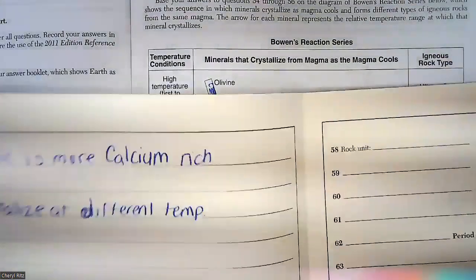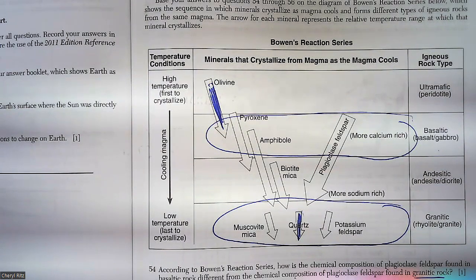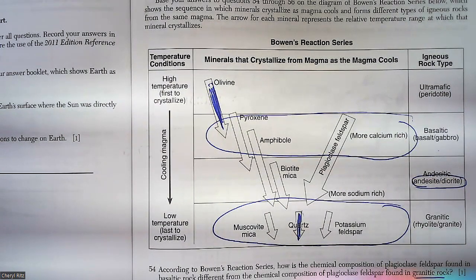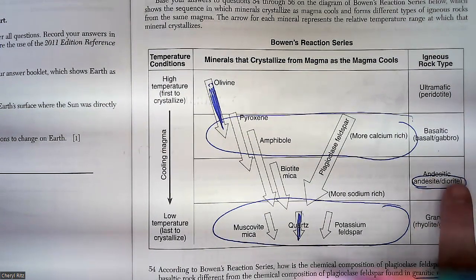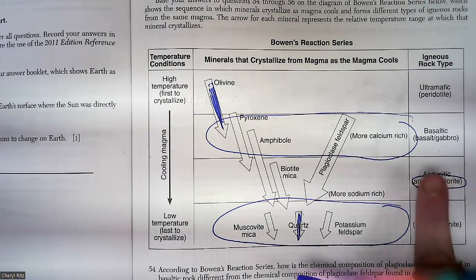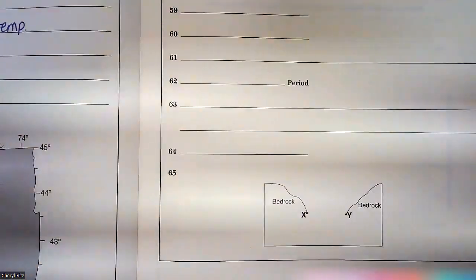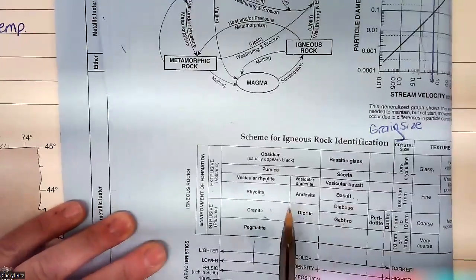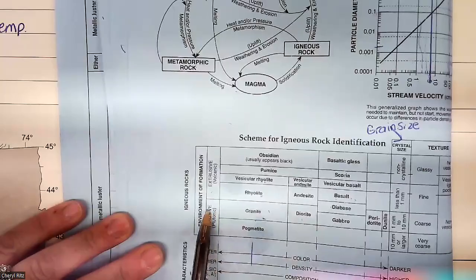Question 56: identify one similarity and one difference between the igneous rocks andesite and diorite. Andesite and diorite are right here. Does this chart tell us anything different between andesite and diorite? It does not — they show them as basically the same rock. So where do we find the difference? That is an ESRT question. They'll give you a chart, reading, or picture — combine that with your reference table and your regular knowledge of Earth science. The biggest difference I'd say is andesite is extrusive, diorite is intrusive.